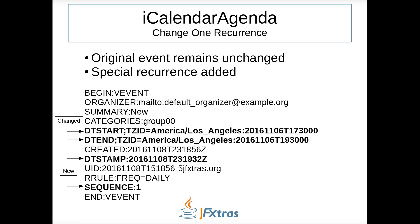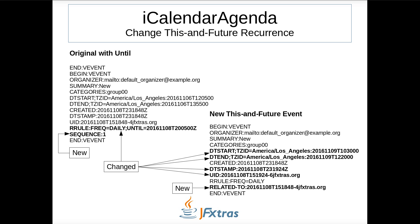Now I'll look at the iCalendar content text created from those changes. For changing one recurrence, the original event remains unchanged and a new event is added to the VCalendar containing most of the same properties — summary, categories, and UID — with DTStart and DTEnd changed to the new times, and a recurrence ID property added with the date-time of the recurrence it's replacing. For the this-and-future change, the original event gets the until element added to the RRule and its sequence property incremented. A new event is created with updated DTStart, DTEnd, DTStamp, and UID, and a related-to property containing the UID of the original.